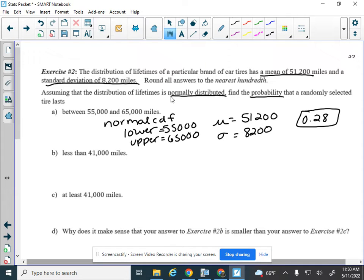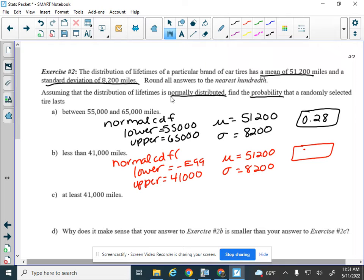The next one wants less than 41,000 miles. So it's normal CDF again, of course. Lower and upper. So I want less than 41,000. The highest I want is 41,000. And we're going to go to the negative E99 for our lower. Whenever we need to go down forever, we use that negative E99. So same mean and standard deviation for this problem. And this one would calculate to 0.11.